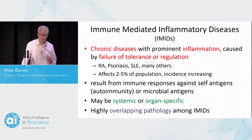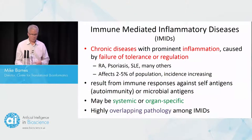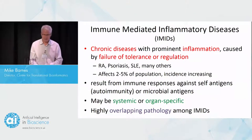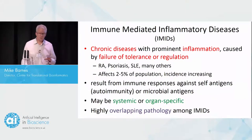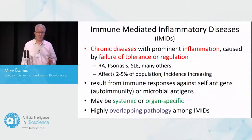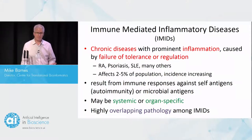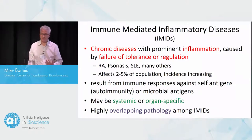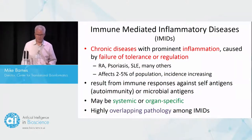Just in the same way, psoriasis affects the skin, but also has systemic effects. What's really interesting about IMIDs is that they're highly overlapping — there's a lot of co-morbidity, a lot of similarities. So it's a great paradigm for computational biology and for AI.